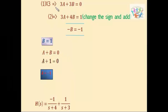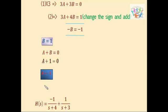So equating equations 1 and 2, we will get the value for B as 1 and for A we will get minus 1. Substituting the A and B values in H(s), we will get minus 1 by s plus 4 plus 1 by s plus 3.